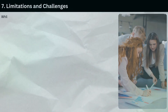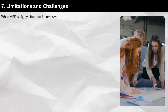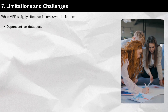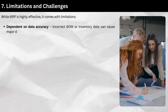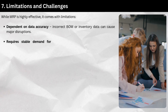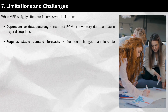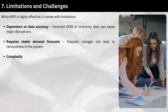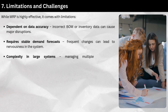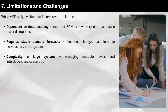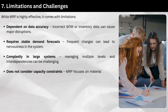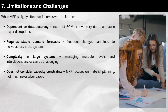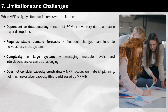Limitations and challenges: While MRP is highly effective, it comes with limitations. It is dependent on data accuracy — incorrect BOM or inventory data can cause major disruptions. It requires stable demand forecasts, as frequent changes can lead to nervousness in the system. Complexity in large systems makes managing multiple levels and interdependencies challenging. MRP also does not consider capacity constraints — it focuses on material planning, not machine or labor capacity. This is addressed by MRP2.